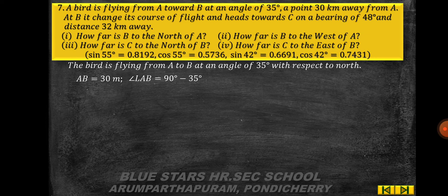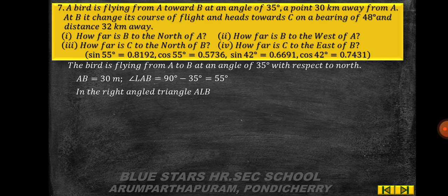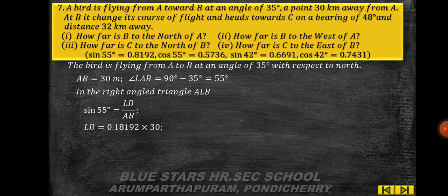The bird flies from A to B at 35° from north, so AB = 30 km and ∠LAB = 90° − 35° = 55°. Note: the diagram will be shown at the end of the video. In right triangle ALB: sin 55° = LB/AB, so LB = 0.8192 × 30 = 24.58 km.